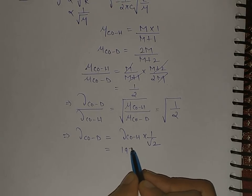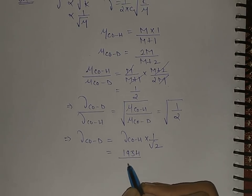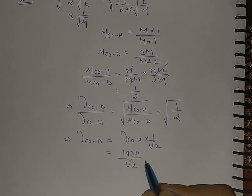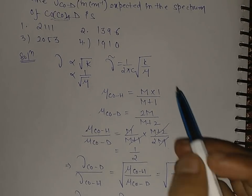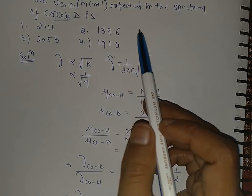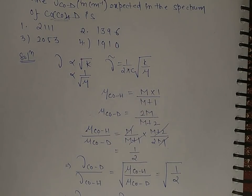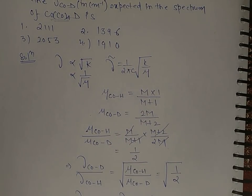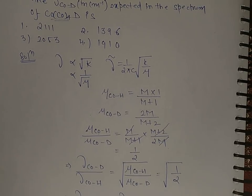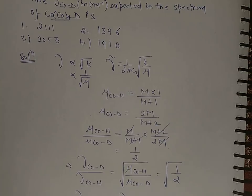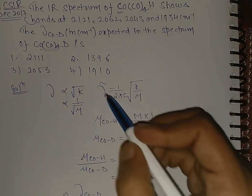So let's take this value 1934. This is 1934 divided by root 2, and this will come around this value which is in option B, 1396. So this will come around 1370 centimeter inverse, so option B is correct.